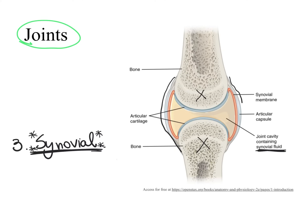The articular capsule is the outermost part and attaches to the periosteum of the articulating bones, firmly connecting them together. When we look at the inner layer of the articular capsule, we see a membrane that lines the interior of the capsule, as well as the parts of the articulating bones not covered with articular cartilage — and articular cartilage is hyaline cartilage.